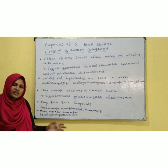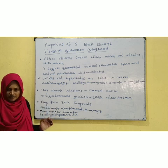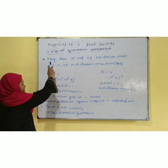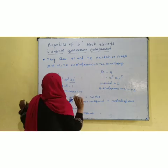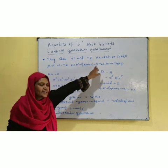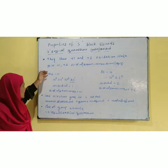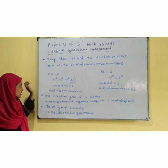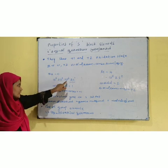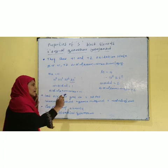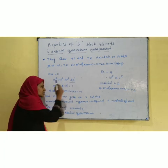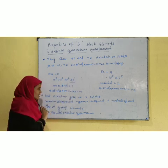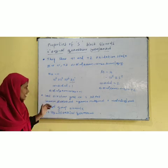This is the S-Block. S-Block elements show a +1 and +2 oxidation state. For example, consider an element with atomic number 18 — its sub-shell electron configuration is 1s2, 2s2, 2p6, 3s1. The outermost sub-shell has 1 electron, which determines the valency.